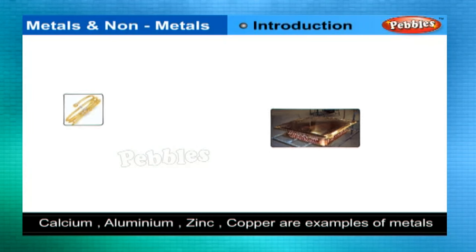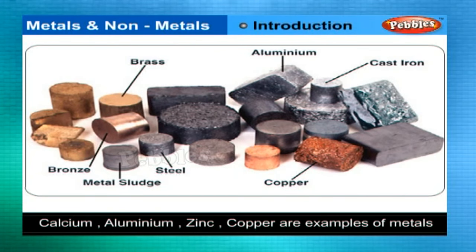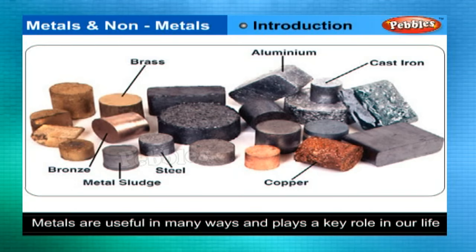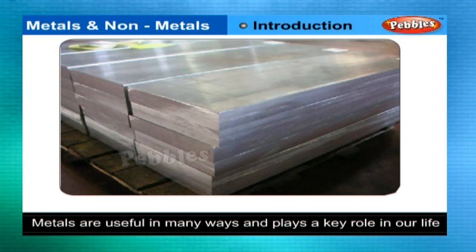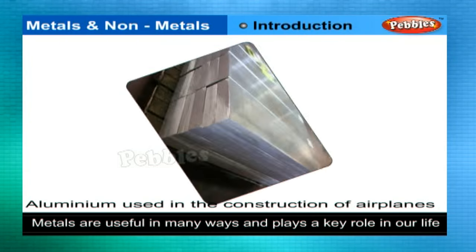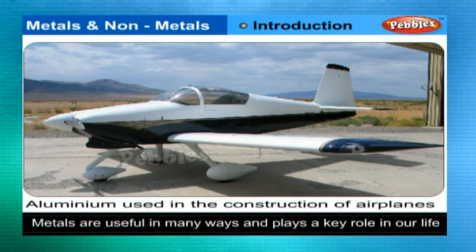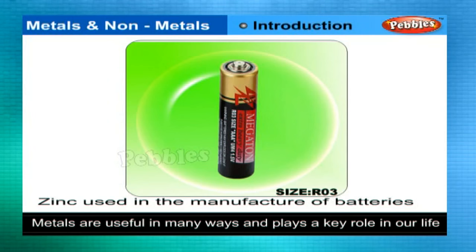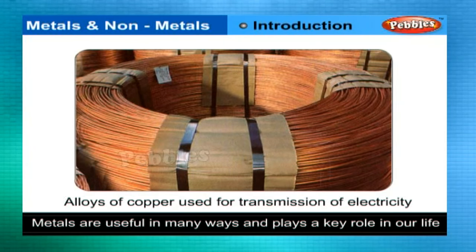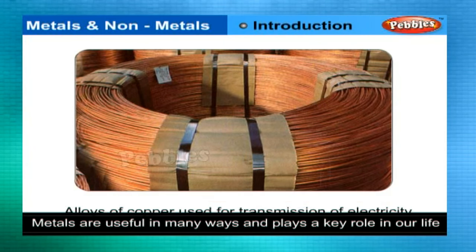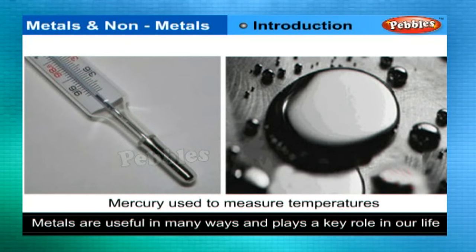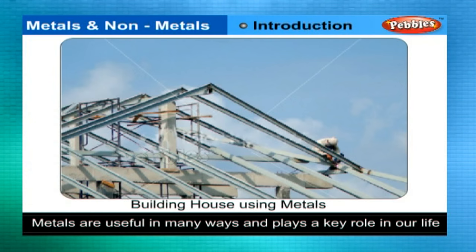Calcium, aluminium, zinc, copper, and mercury are examples of metals. Metals are helpful to us in many ways. We use them in the construction of houses, automobiles, electrical appliances, and they also play a key role in the transmission of electricity.